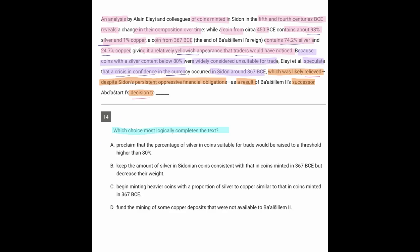So this is definitely not one of my favorite questions, because I think I might have originally wanted to pick A on this one, but we'll get into the differences. So A says the decision would have been to proclaim that the percent of silver suitable for trade would be raised to a threshold higher than 80%.